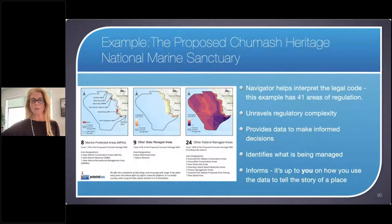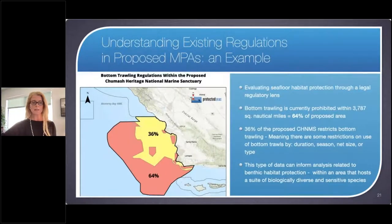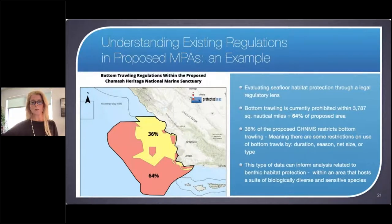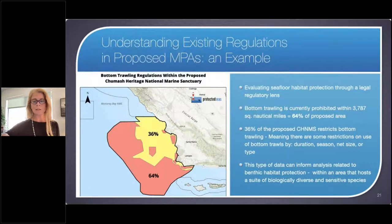The Navigator tool can identify what is currently being managed. On the map, areas in red are State of California designated marine protected areas. There are nine other state managed areas and 24 other federal managed areas related to essential fish habitat, groundfish conservation areas, gear restrictions, and other things. We also evaluated seafloor habitat through a regulatory lens, looking at bottom trawling for the proposed area. We found that bottom trawling is currently prohibited within 64% of the proposed area, and within the remaining 36% it's restricted by duration, season, net size, or other issues.